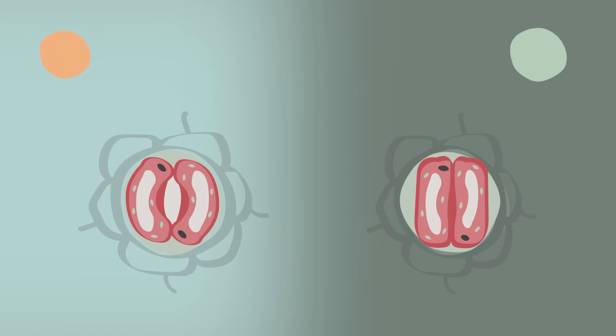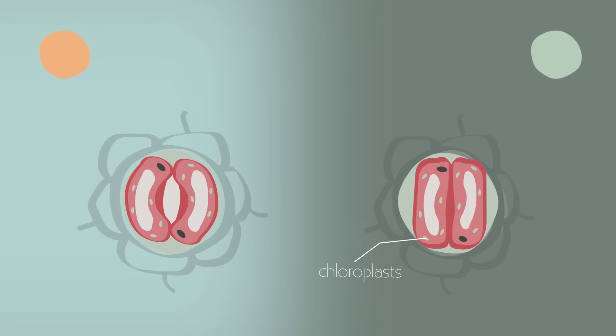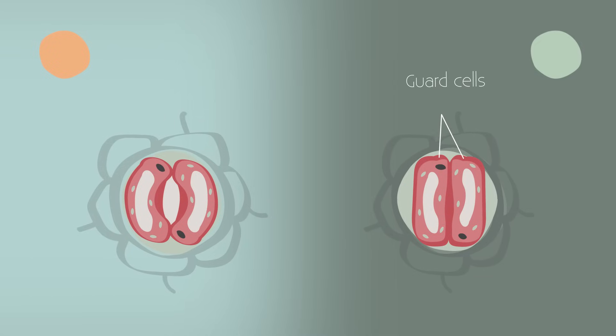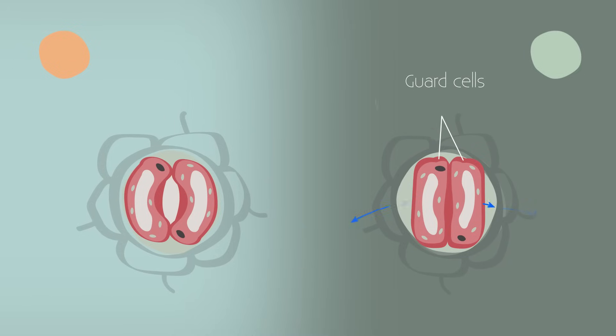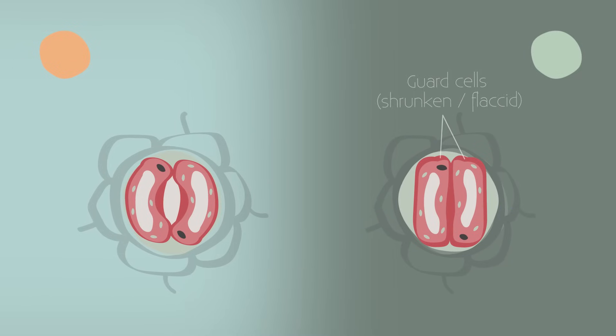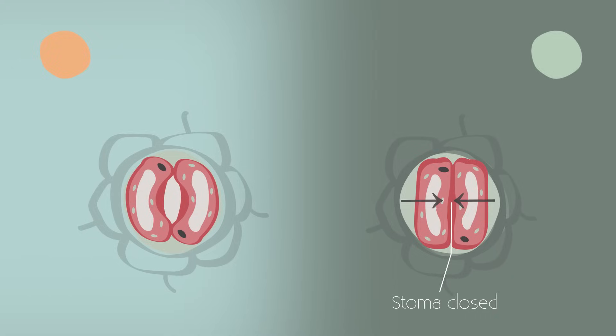During the night, all the sugar produced by the chloroplasts gets used up, so the water potential of the guard cells increases. More water, less sugar. The guard cells lose water by osmosis and become flaccid, and the stomata starts to close. This reduces water loss.